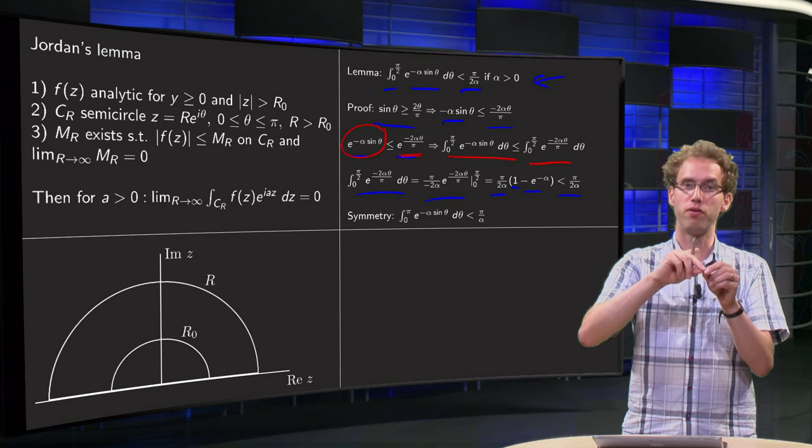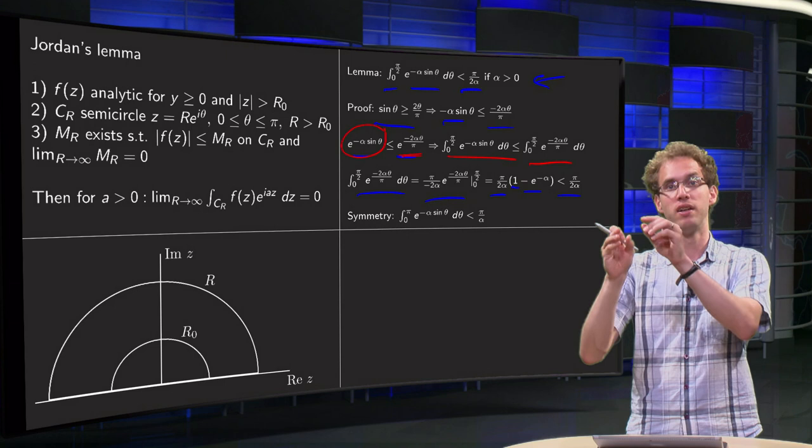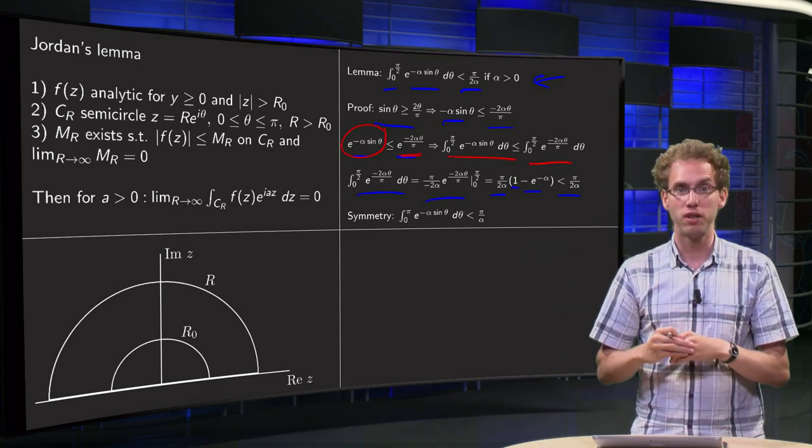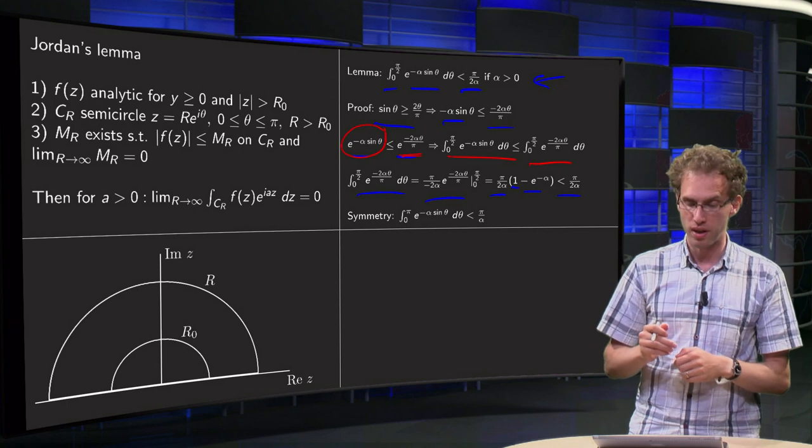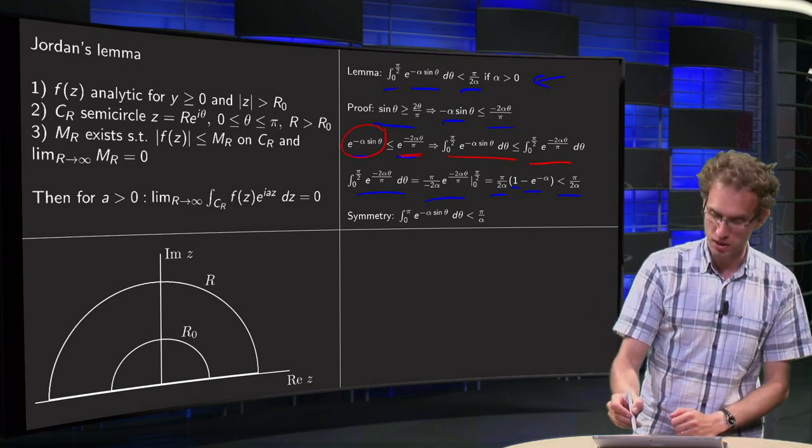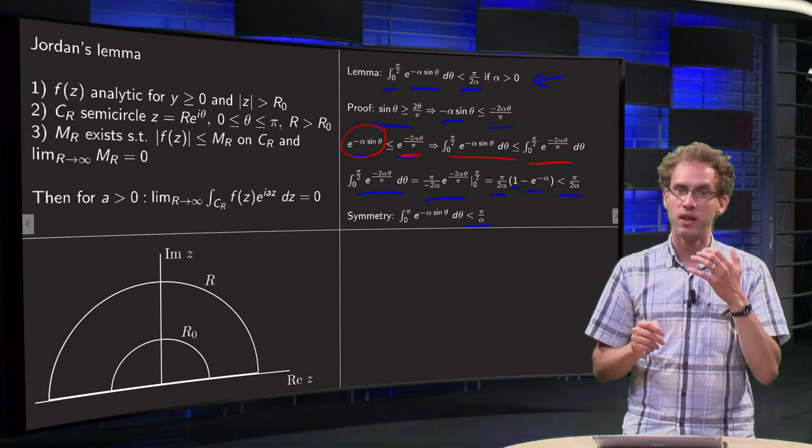Because you have a sine in your function. The sine from 0 to π/2 in the integral will give the same as the sine from π/2 to π due to the symmetry of the sine. So, the integral from 0 to π will be twice as large, which means that your integral is below π over α.